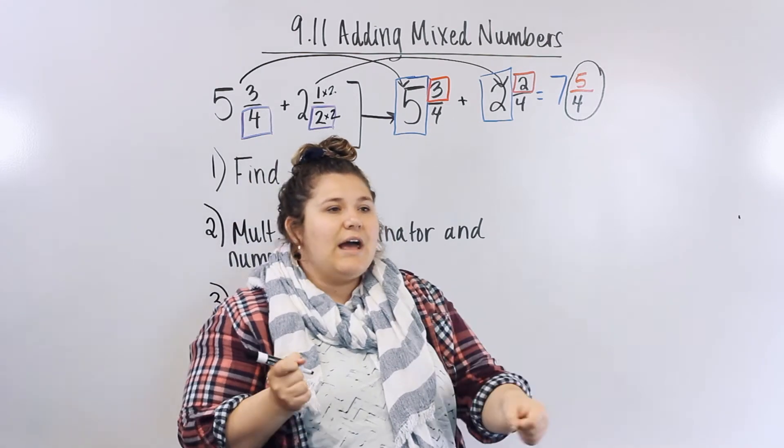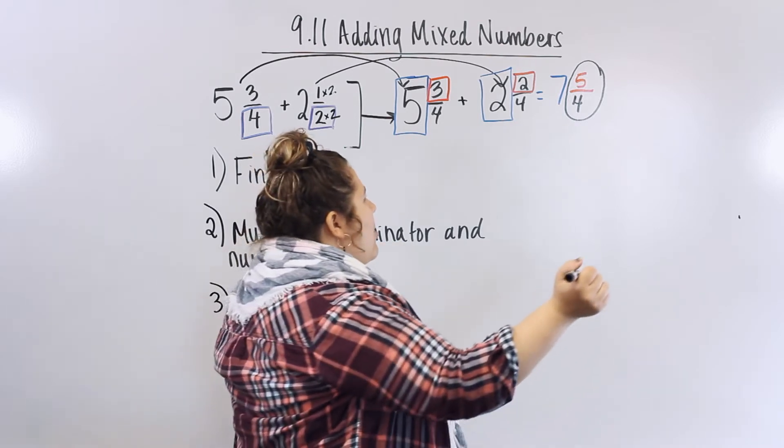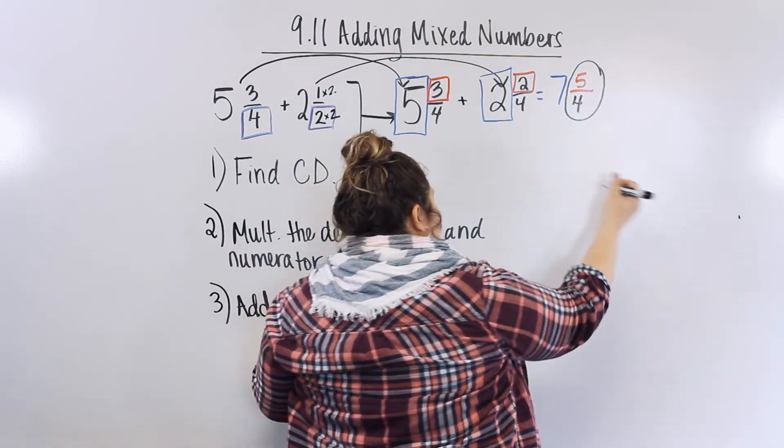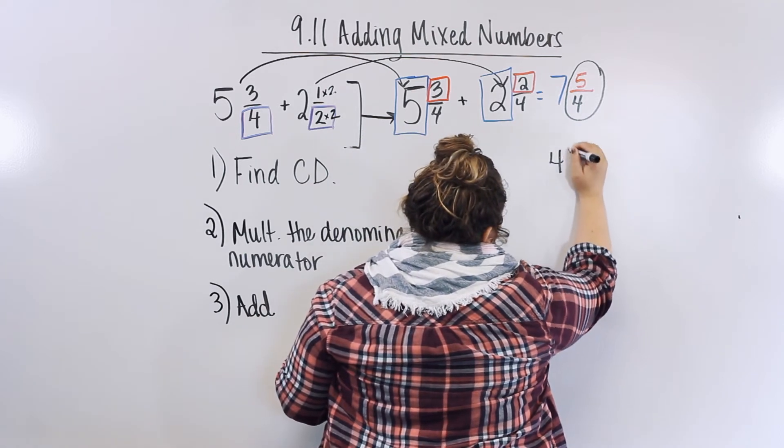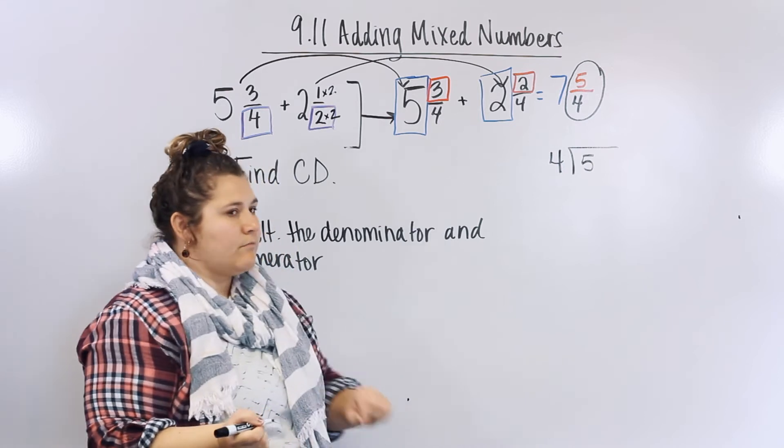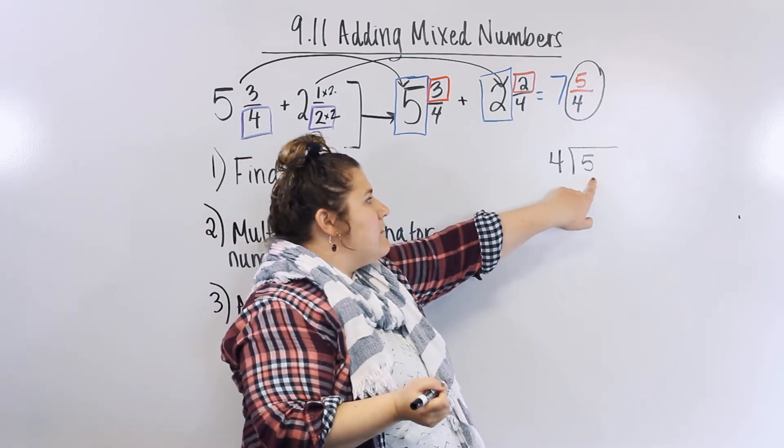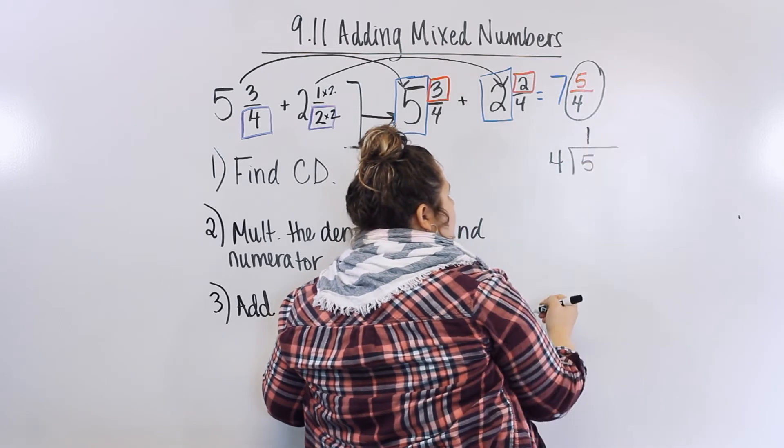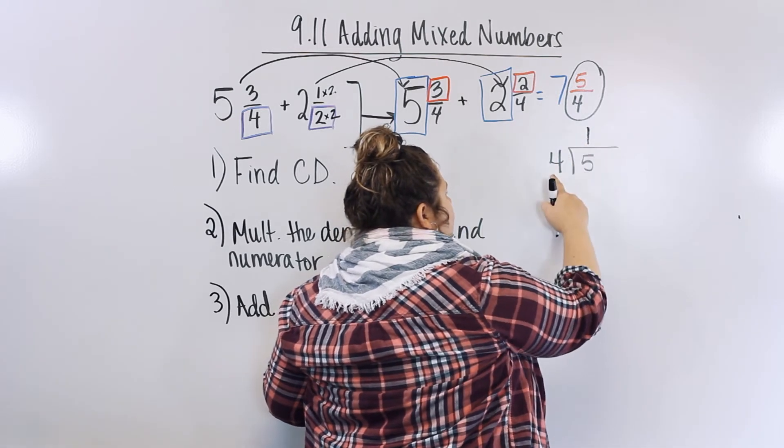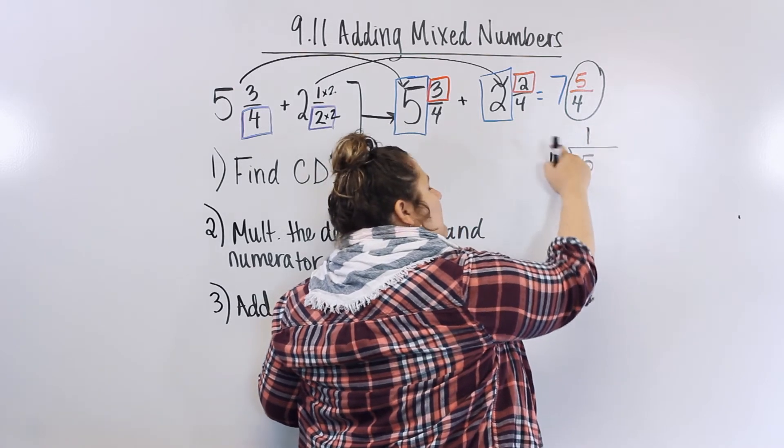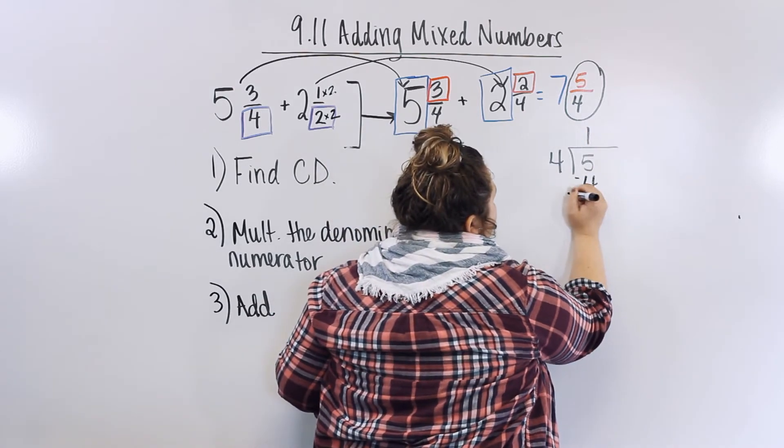Now, do you remember how to change an improper fraction to a mixed number? We watched a funny video on it. Kind of. You guys didn't like it, but it was a jingle. The numerator becomes the dividend. We just divide. So 4 divided by 5. So 4 divided by 5. The numerator became my dividend. 4 times 5. 1. 1 times 4.